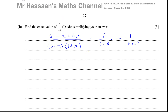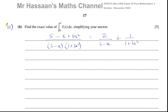Hey, welcome back. This is Mr. Hassan's math channel. I'm now answering question 11 part b of the October/November 2022 Pure Mathematics Paper 3, variant 3, from Cambridge 9709. I've already answered part a, where we had to take a fraction and split it up into partial fractions, and this is what we got — this is what f(x) is equal to.